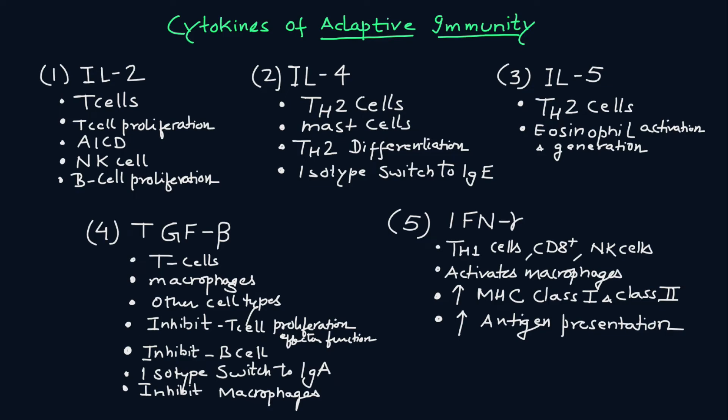These are the major cytokines involved in the adaptive immune system. To summarize, we have discussed IL-2, IL-4, IL-5, TGF-beta, and interferon gamma. I hope you will remember all these cytokines and understand their importance for the adaptive immune system, including the different cell types involved and the functions of each cytokine.